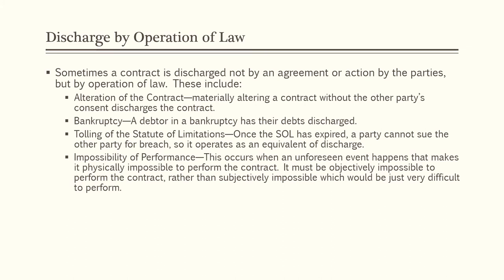Then there's impossibility of performance. This occurs when an unforeseen event happens that makes it physically impossible to perform the contract. It must be objectively impossible to perform, rather than merely subjectively very difficult. For example, suppose a vacation house is under contract in escrow and a hurricane occurs and levels the house. It is now physically impossible for the seller to convey the house to the buyer because the house no longer exists — this is impossibility of performance and it can discharge the sales contract.